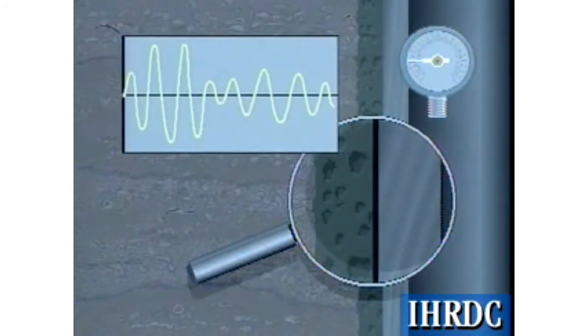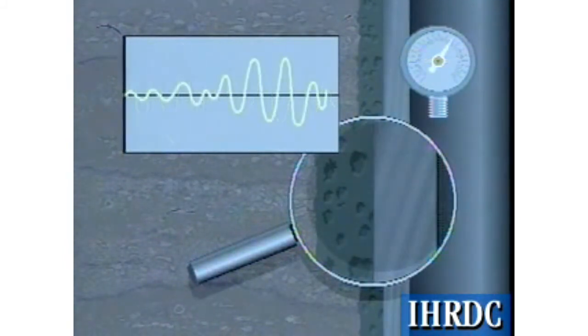However, during logging, if the internal pipe pressure is increased above the curing pressure, the microannulus will be closed, and an interpretable log will result.